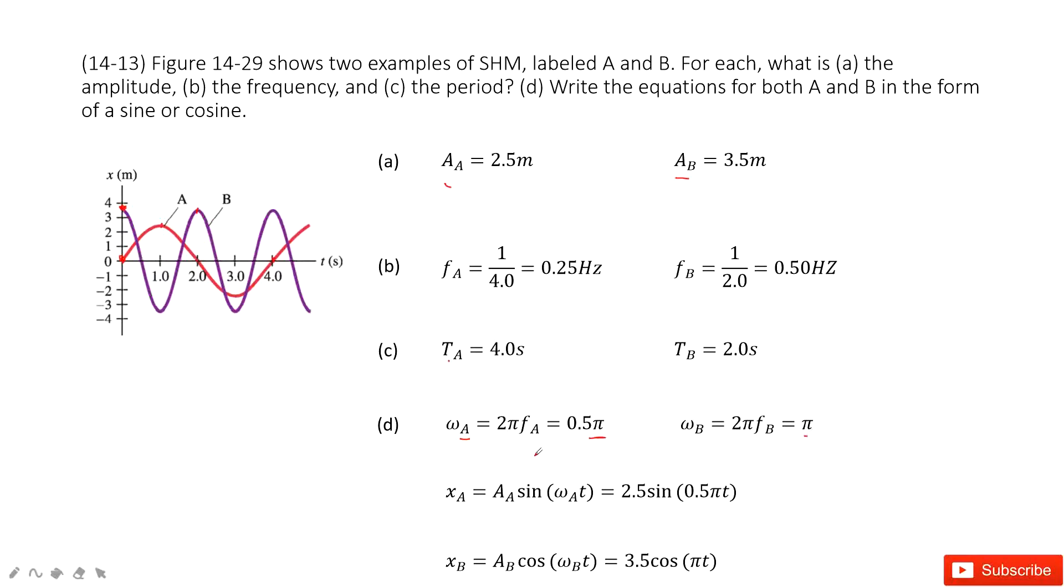Now we input omega A and the amplitude for A inside. Get a function for x(t) for A. Similarly for B it's cosine. So we input AB and omega B inside. Get the answer xB. Thank you.